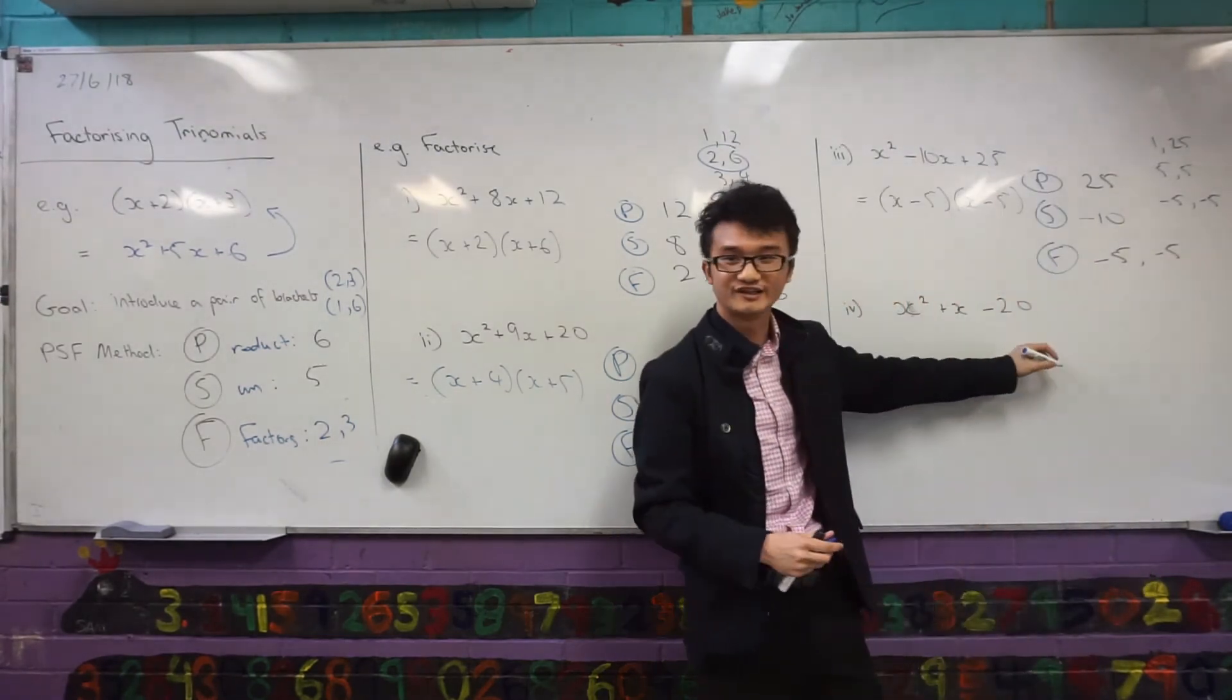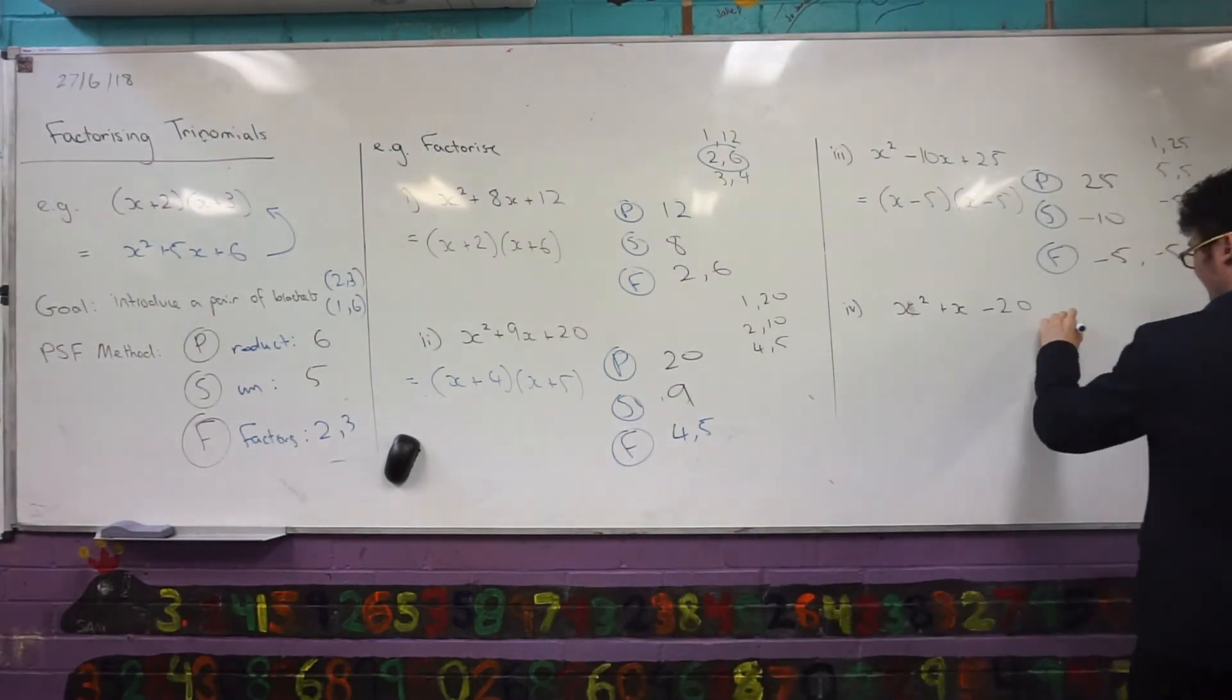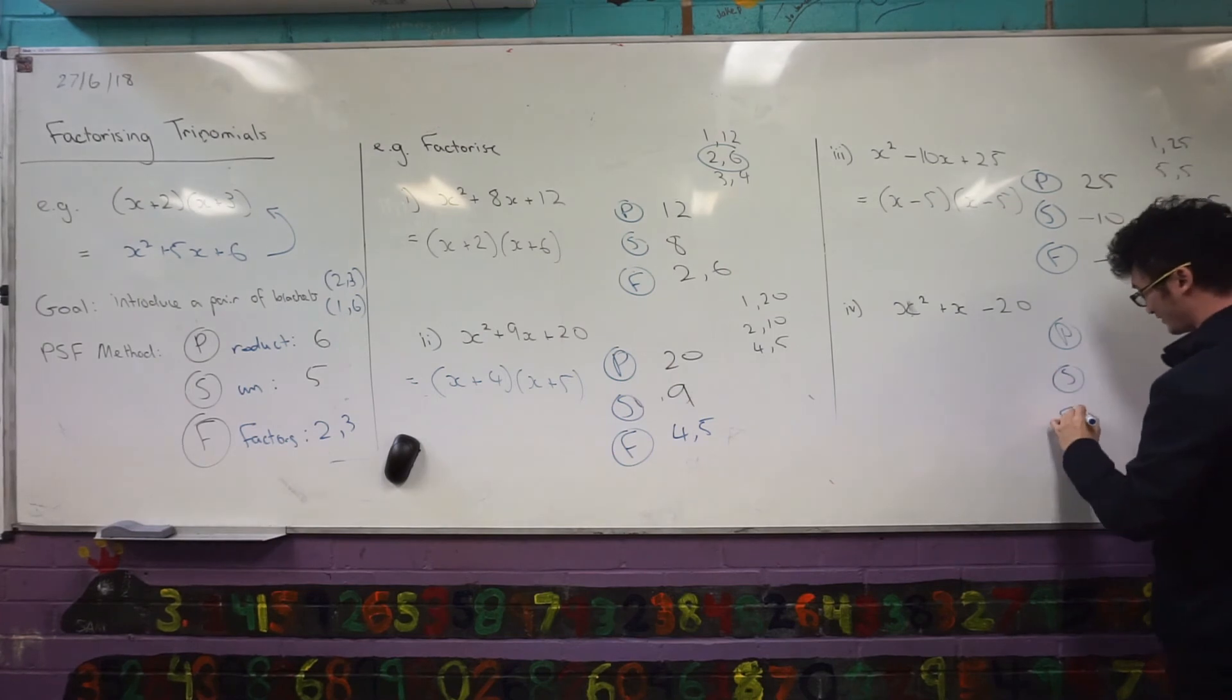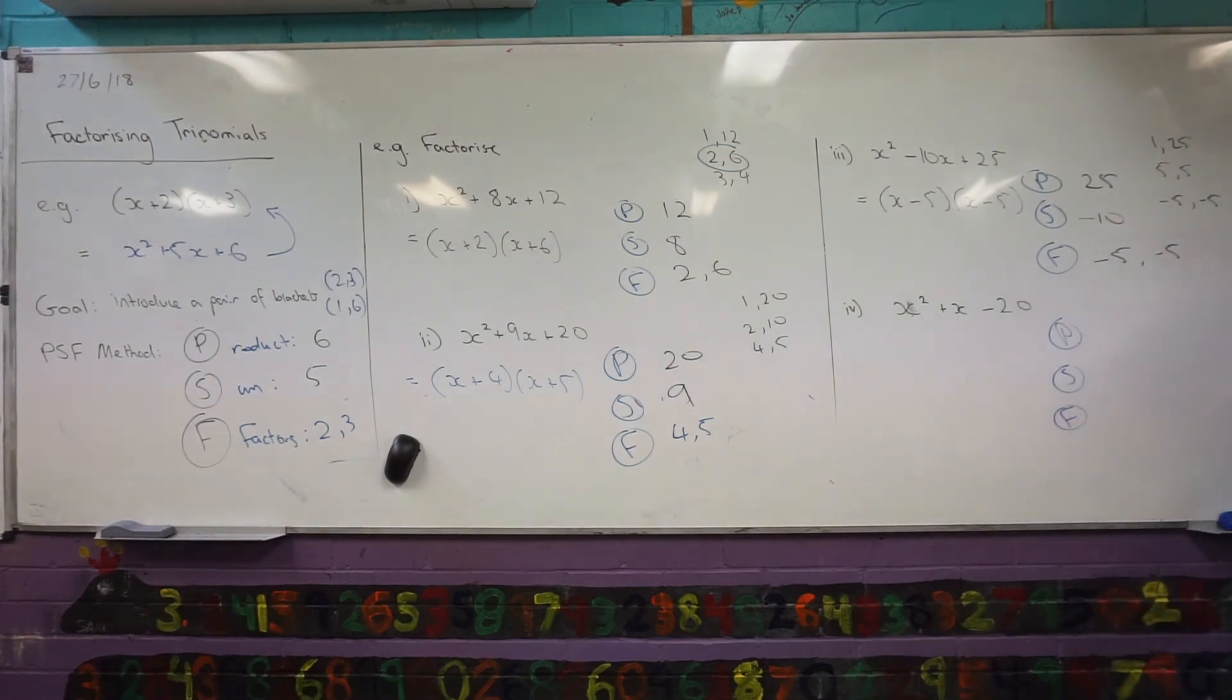All right. Last example. I'm going to get someone to help me out with this one. Don't give me the answer, Rips. Angus, what do I want my numbers to multiply to? Minus 20. I want them to sum to 1. Anyone got an idea of what I need? Emily, yeah? 5 and negative 4. Yep. 5 and negative 4. And just to check, yep, 5 plus minus 4 gives me positive 1. Multiply together, I get negative 20.